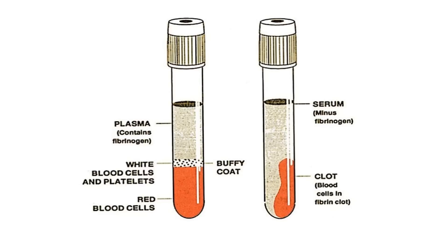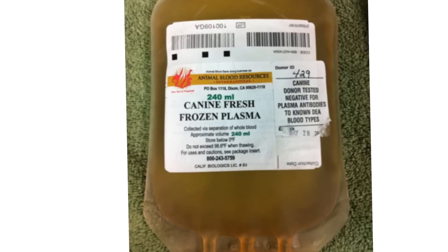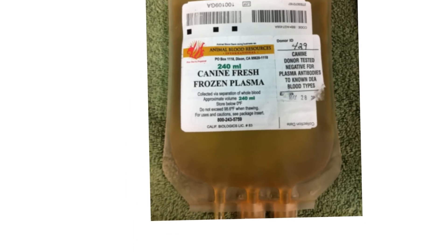A lot of times when you spin blood, the clot will go down and fill the whole bottom volume, just like the plasma side. This picture shows dog plasma that can be used for a transfusion — this happens to be 240 mils, which is also 240 cc's. It has been collected aseptically and it's ready for a plasma transfusion.